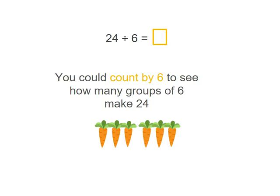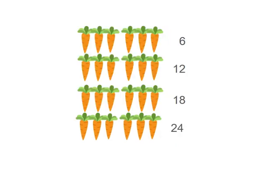Well 24 divided by 6 will give us our answer. You could count by 6 to see how many groups of 6 make 24: 6, 12, 18, 24, so four groups of 6 make 24. 24 divided by 6 equals 4.